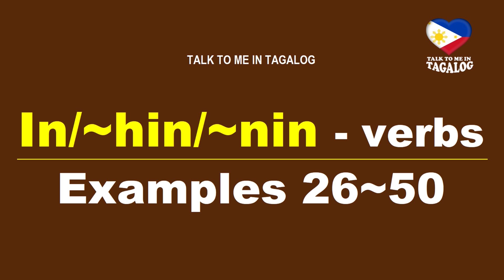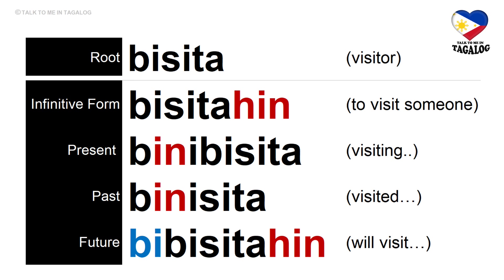Root word: bisita. Infinitive form: visitahin — to visit someone. Present tense: binibisita — visiting someone. Past tense: binisita — visited someone. Future tense: binibisitahin — will visit someone.